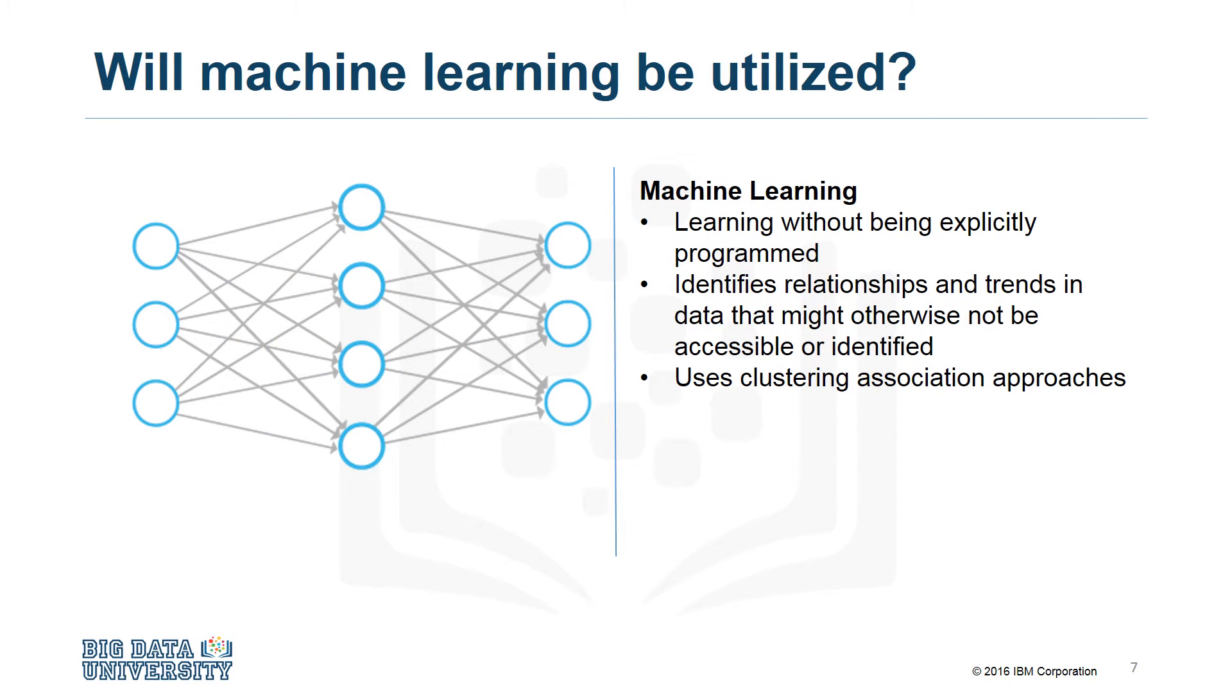Machine learning is a field of study that gives computers the ability to learn without being explicitly programmed. Machine learning can be used to identify relationships and trends in data that might otherwise not be accessible or identified.